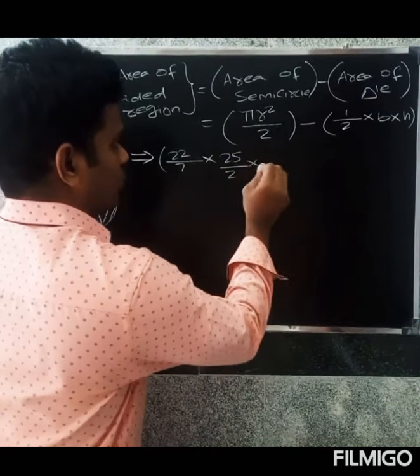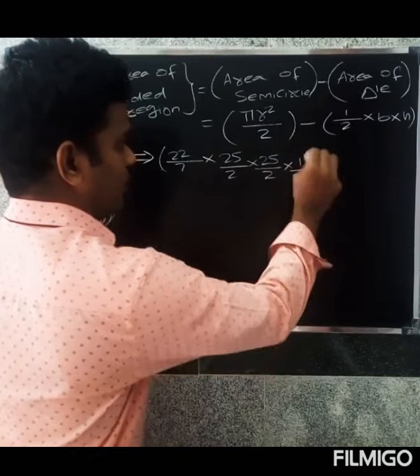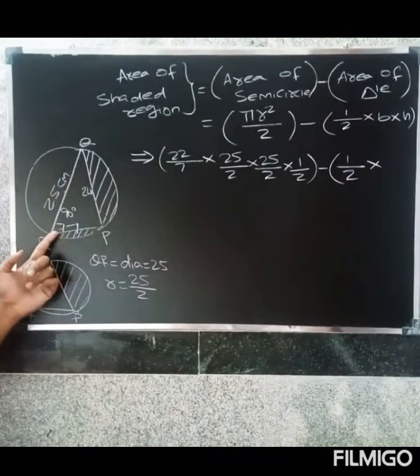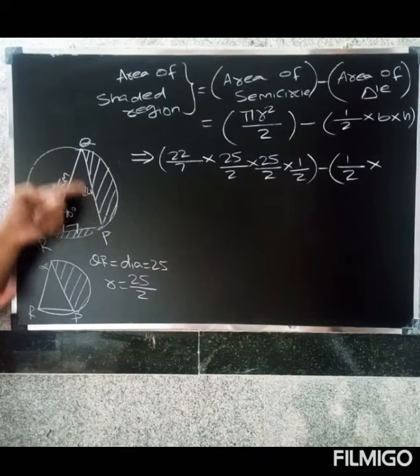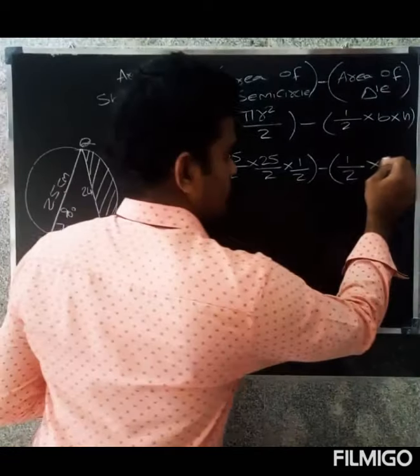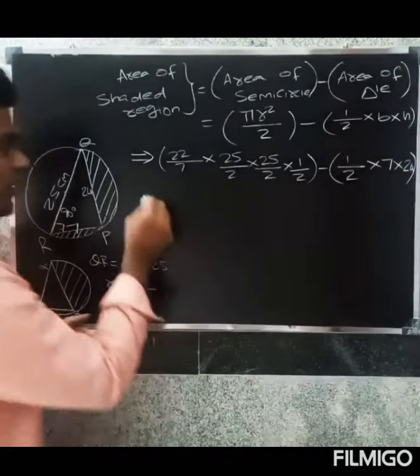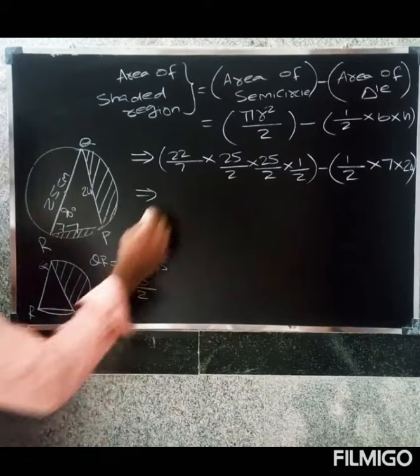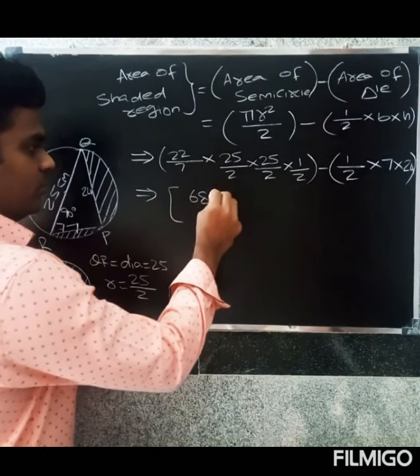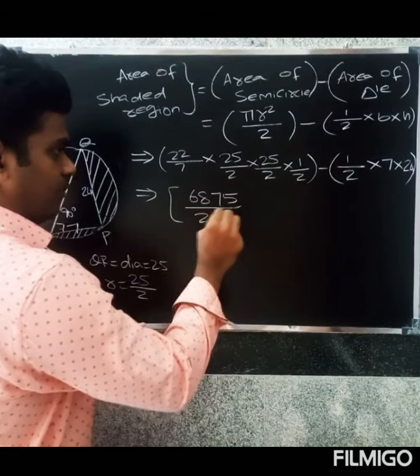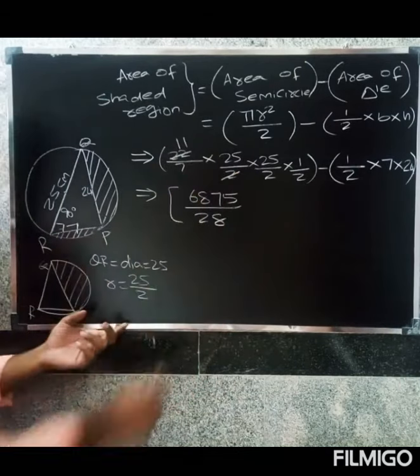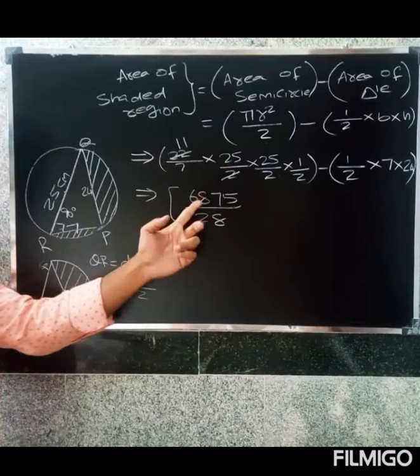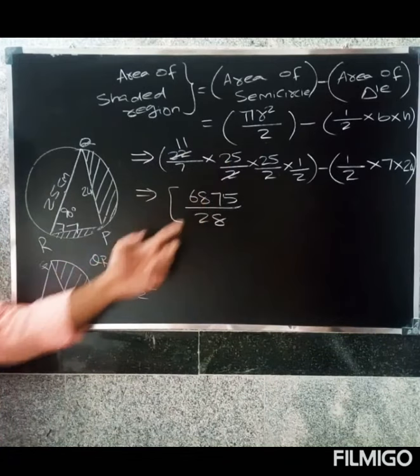Substituting: 22 by 7 into 25 by 2 into 25 by 2, divided by 2, minus 1 by 2 into base 7 into height 24. Simplifying, we get 6875 divided by 28 minus 84.